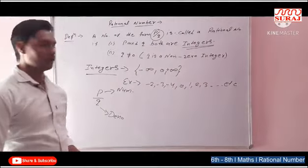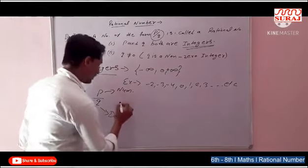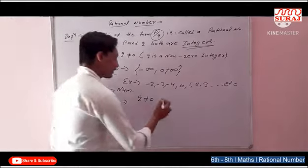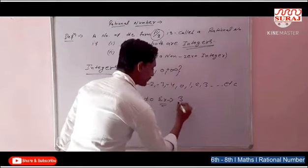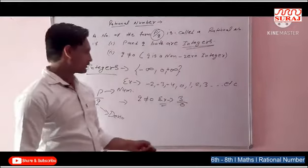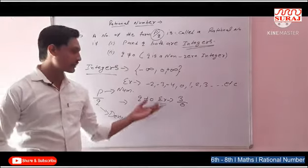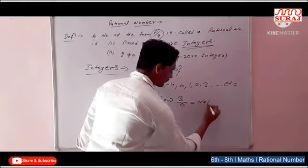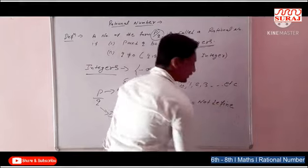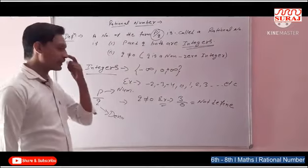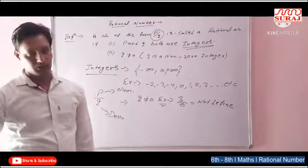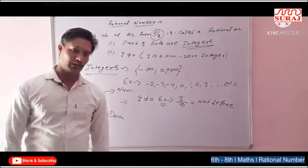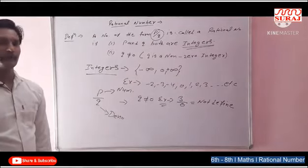Denominator kabhi zero nahi ho sakta. Dekho, Q not equal to zero — matlab zero nahi ho sakta. Example lete hain: agar hum likhein 3 upon 0, to humne aaj tak kabhi bhi is term ka solution nahi seekha. Kisi bhi number ko agar zero se divide karenge, yeh jo term hoti hai usse hum kehte hain 'not defined.' It means agar hum solution karte hain ek P by Q form ke number ka, aur denominator zero ho jata hai, to woh term ho jaati hai not defined, kyunki hum uska solution find out nahi kar sakte.